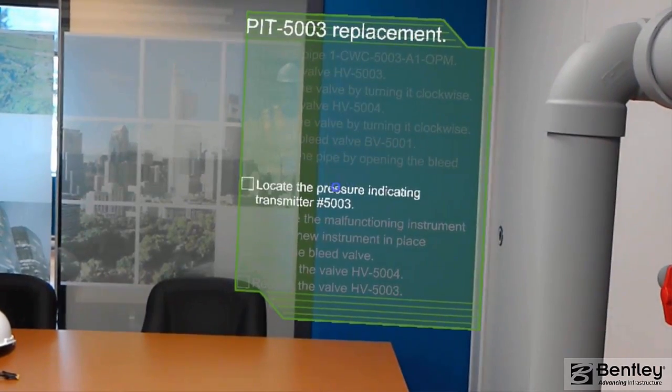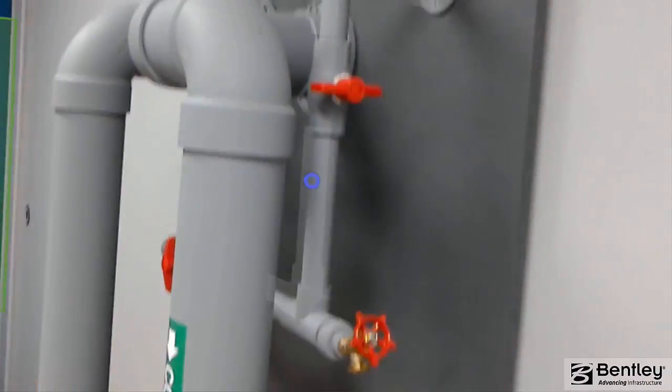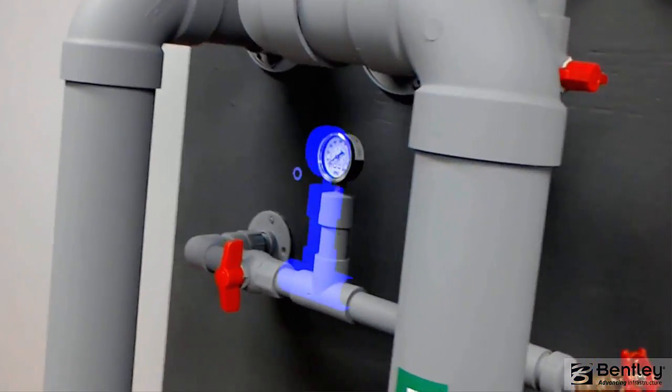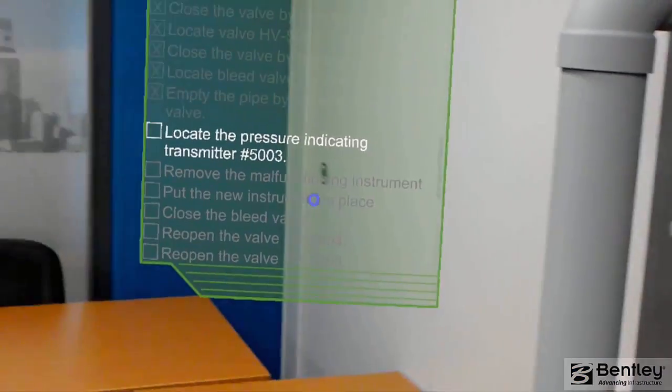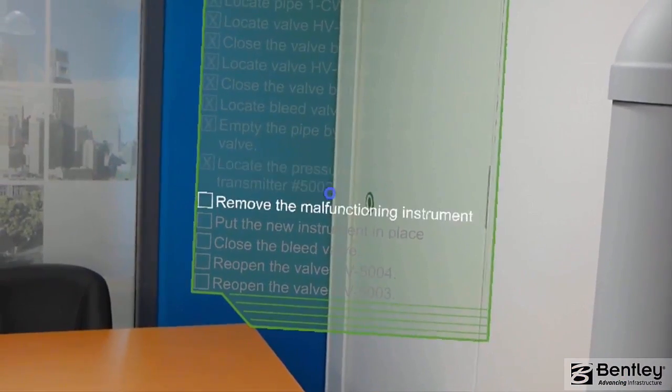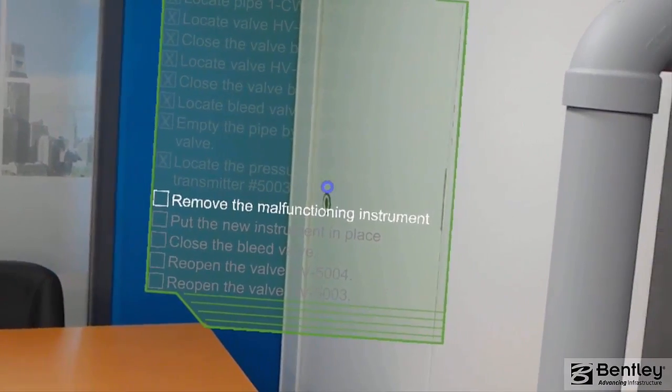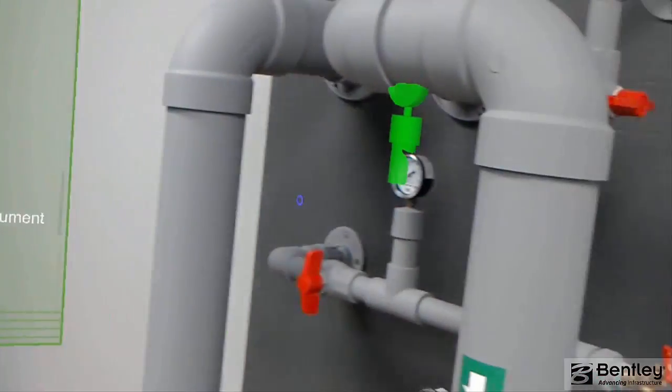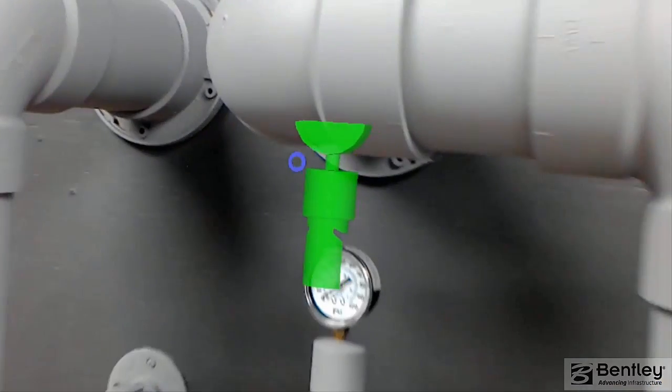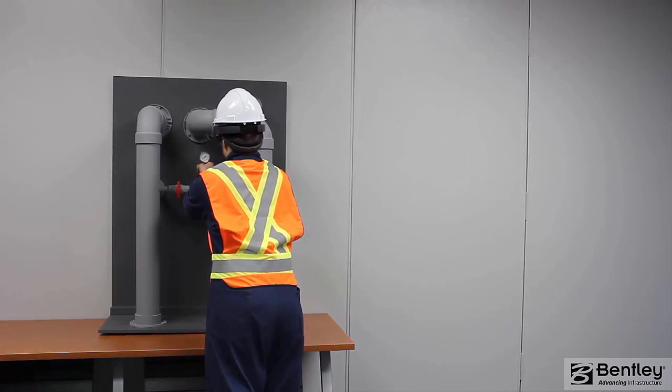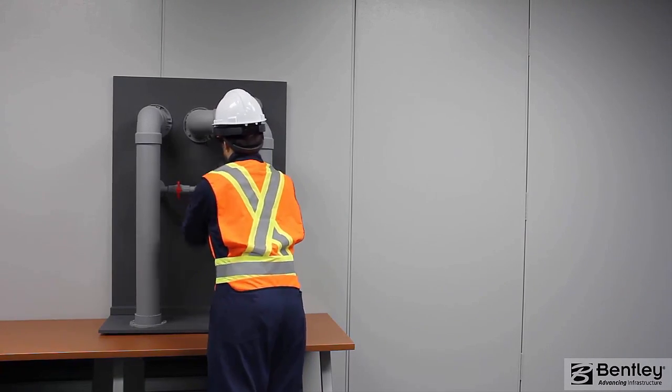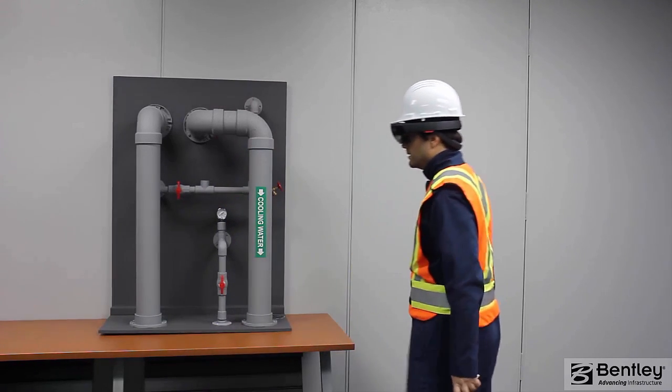Check. Now, locate the pressure indicating transmitter number 5003. Check.